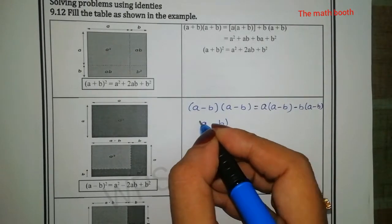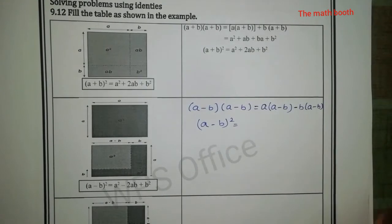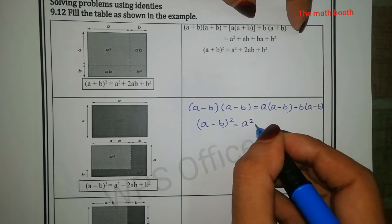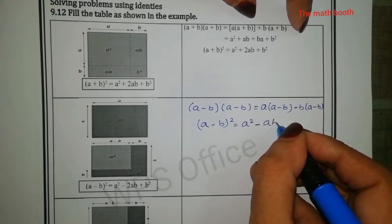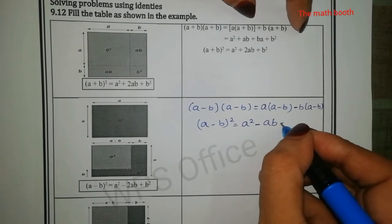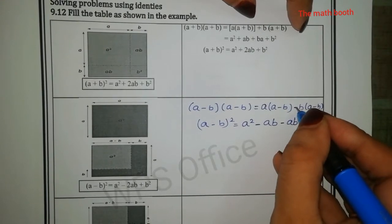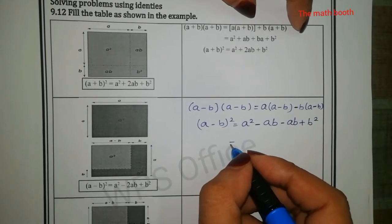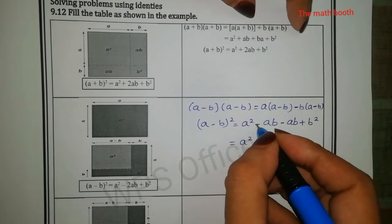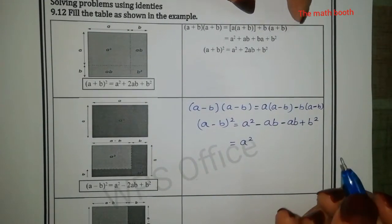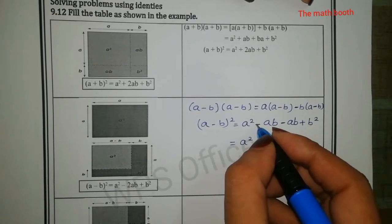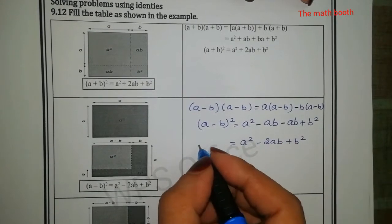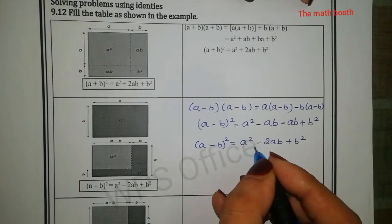So (a - b)(a - b) is nothing but (a - b) whole square. Let us see how to solve this: a into a gives a², a into b gives ab, b into a gives ab, and b into b gives b². So a² minus ab minus ab — minus minus is plus — so ab plus ab gives 2ab, but the sign will be minus, giving minus 2ab plus b².